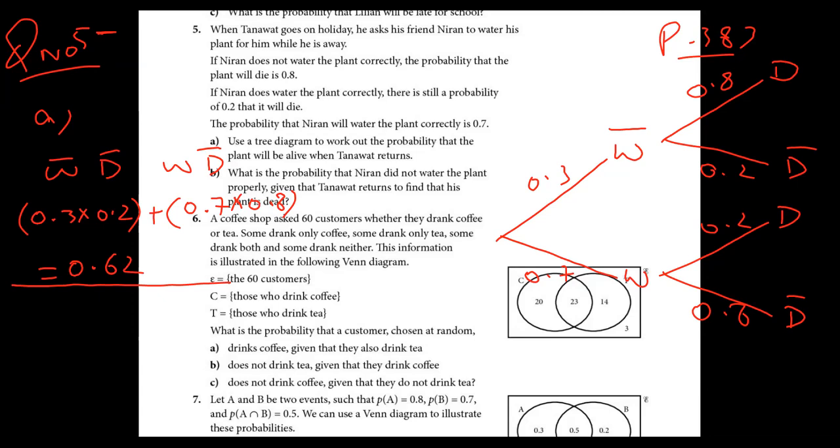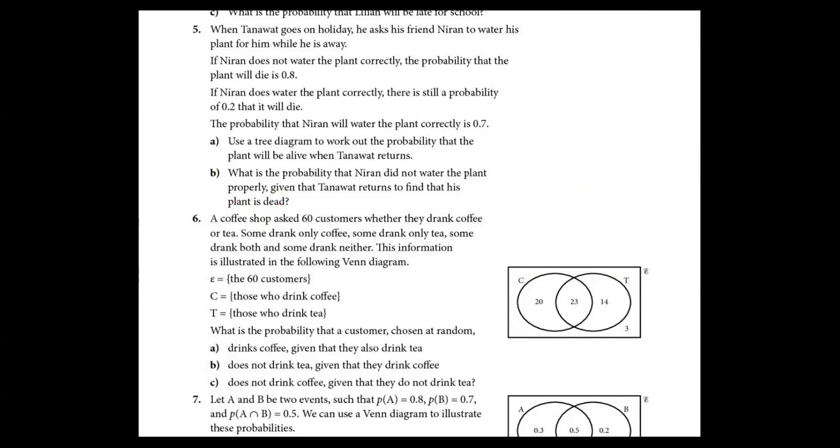Let's talk about the second part. The second part is asking what is the probability that Niran did not water the plant given that. I said before, whenever you have a given that, conditional probability comes. Let me complete the sentence. We have two things here: before given that, after given that.